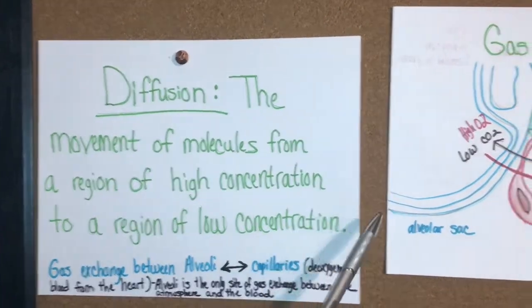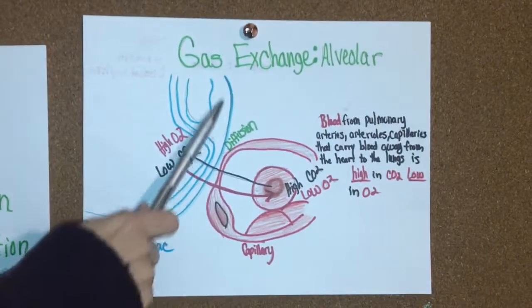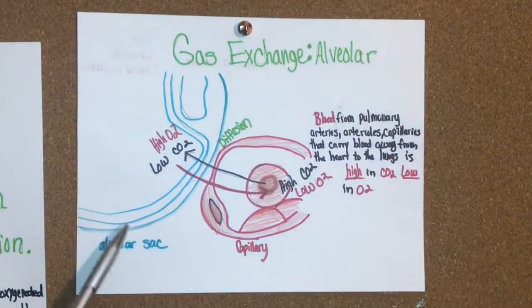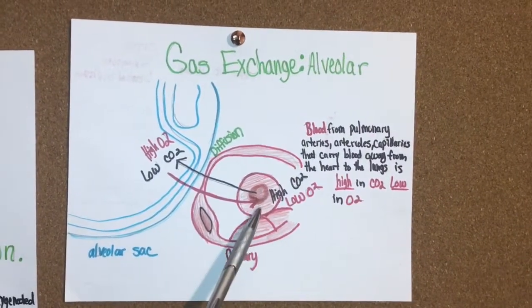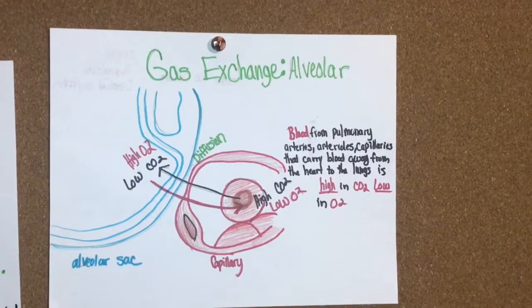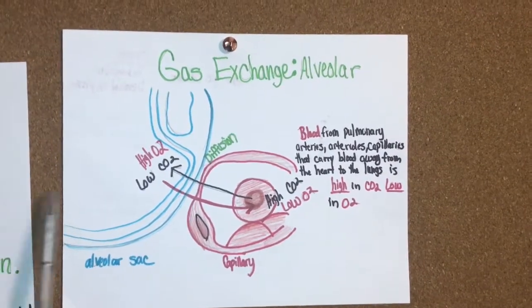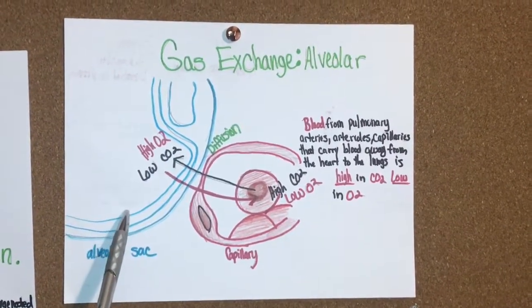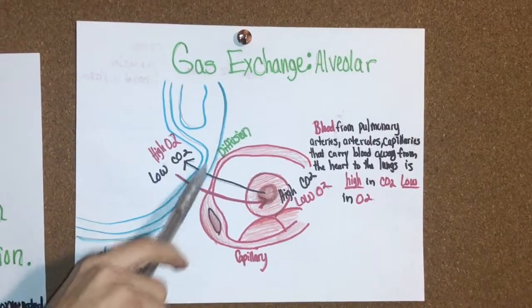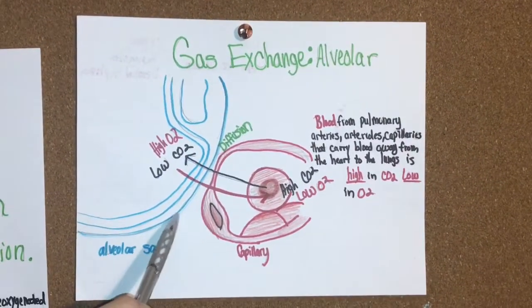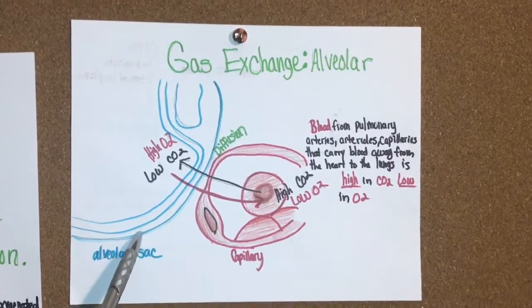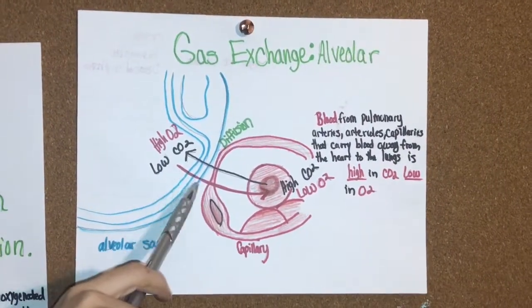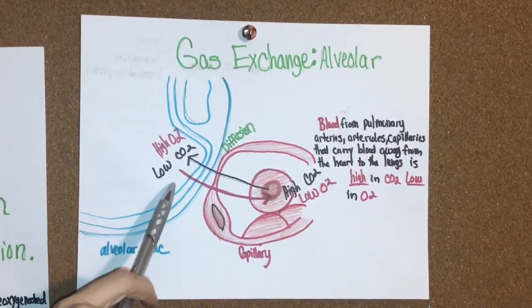So right over here is the drawing to demonstrate gas exchange. Here's the alveolar sac and here's the capillary and the red blood cell. This is why it's important to understand diffusion. Both the respiratory membrane and the capillary are made of simple squamous endothelium, so that way diffusion can happen quite easily across the membranes.